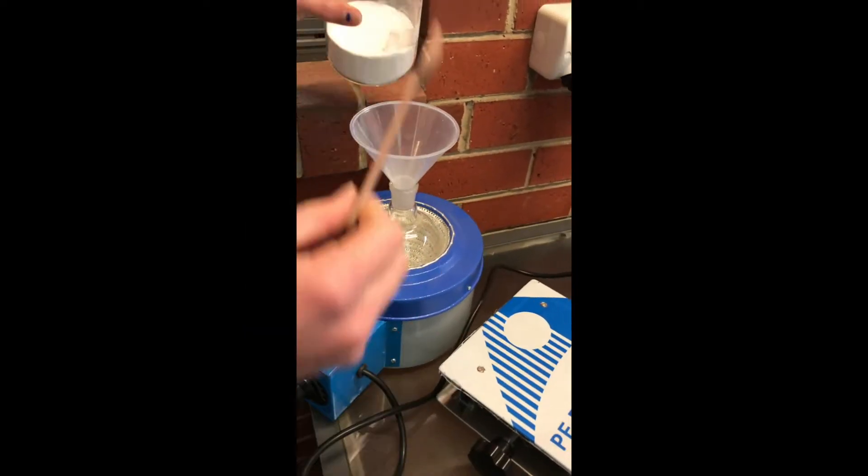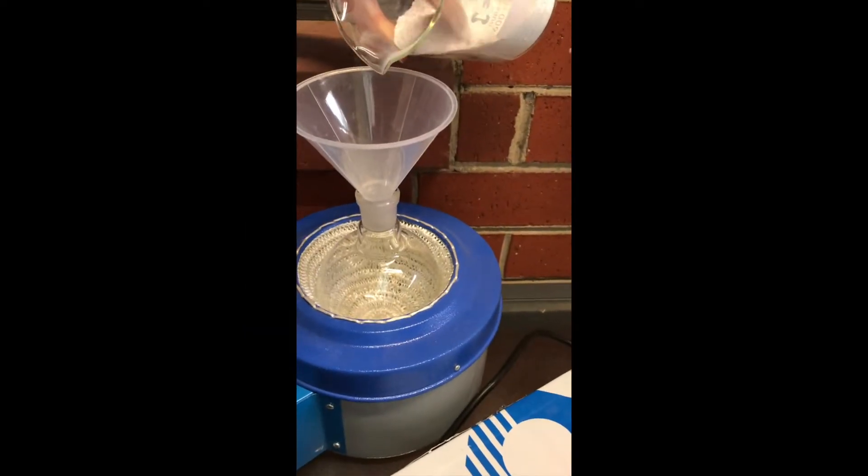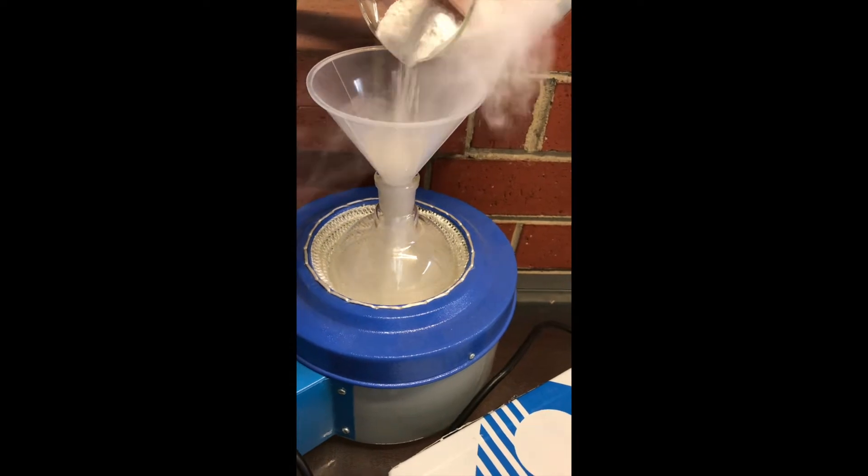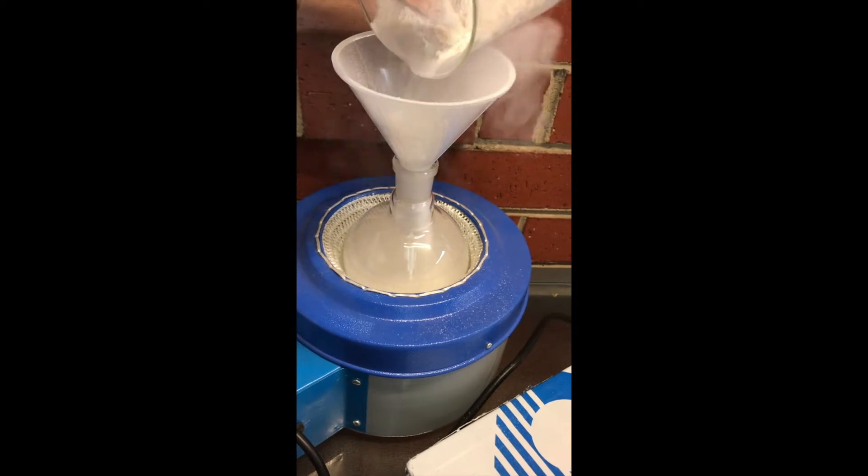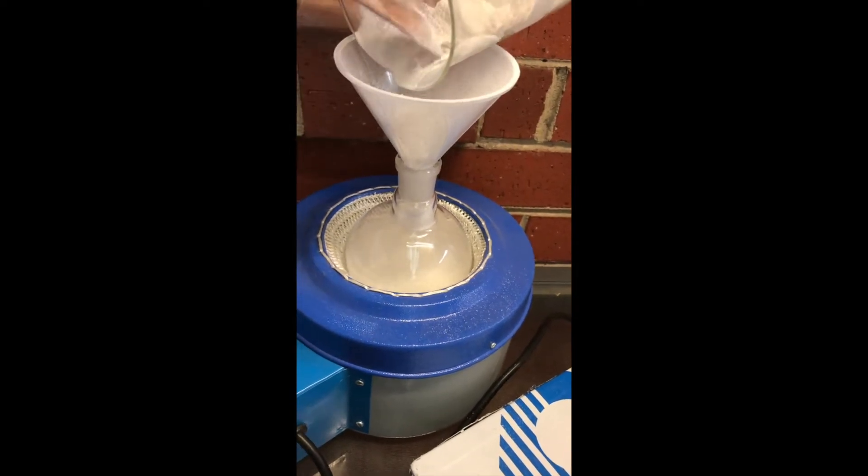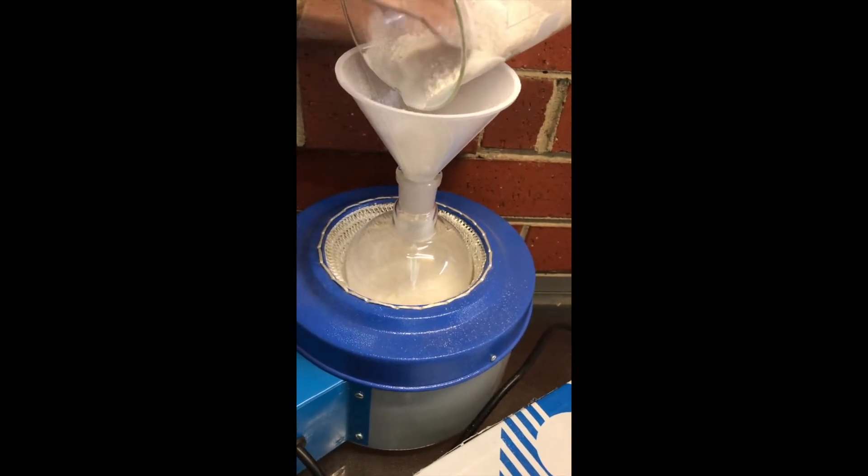Firstly, before I set up the condenser, I pour 93.98 grams of anhydrous calcium acetate into a 500 milliliter round bottom flask. Whilst pouring the calcium acetate, I should have been more careful there, as I probably lost a few grams.